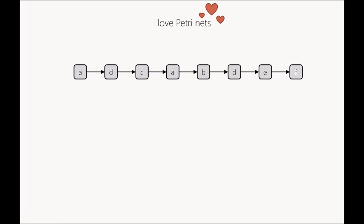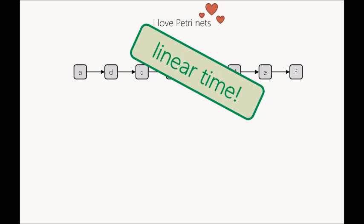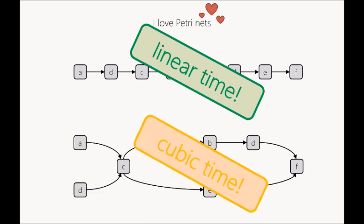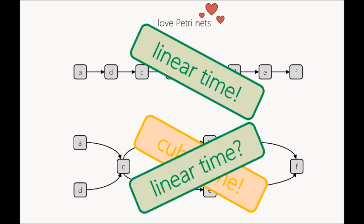To summarize known theory: if you have a firing sequence, you can check in linear time if it's in the language of a Petri net. If you have a partial order, you can check in cubic time, which is quite fast. But if you consider applications where you have lots of behavioral data — for example in process mining — then linear time is better than cubic time. So in this paper, we ask: what can be done in linear time for partial orders? What about firing partial orders?